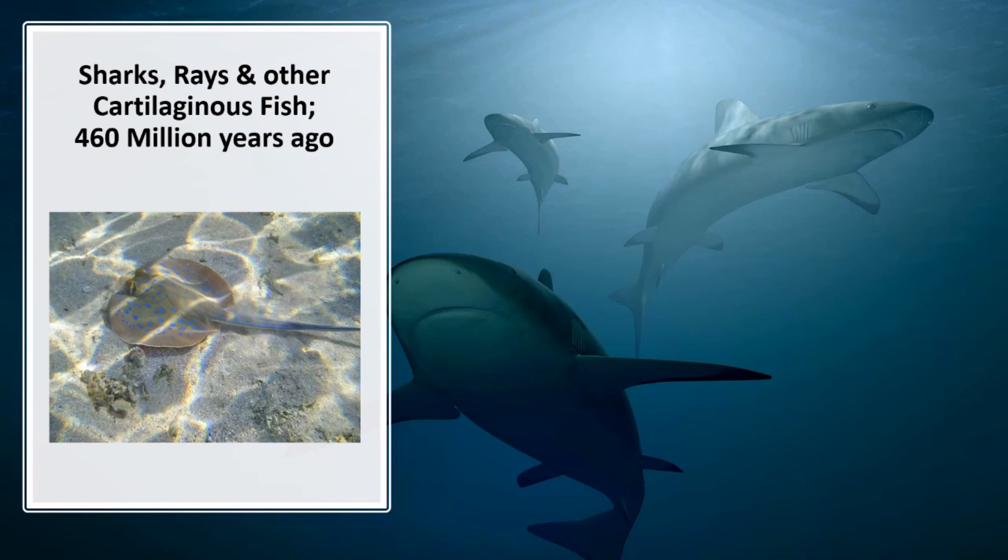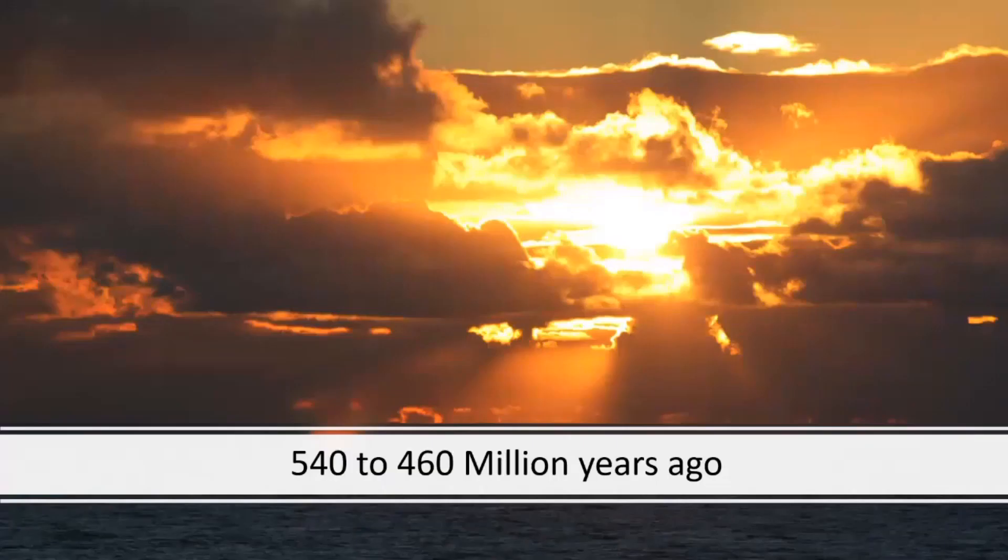Previous vertebrates such as the agnatha were jawless, but the shark had evolved a jaw and could thus be the ancestor of all vertebrates with true jaws. The prevailing climate had supported this golden age of evolution, but at the end of this period an enormous climate change took place.